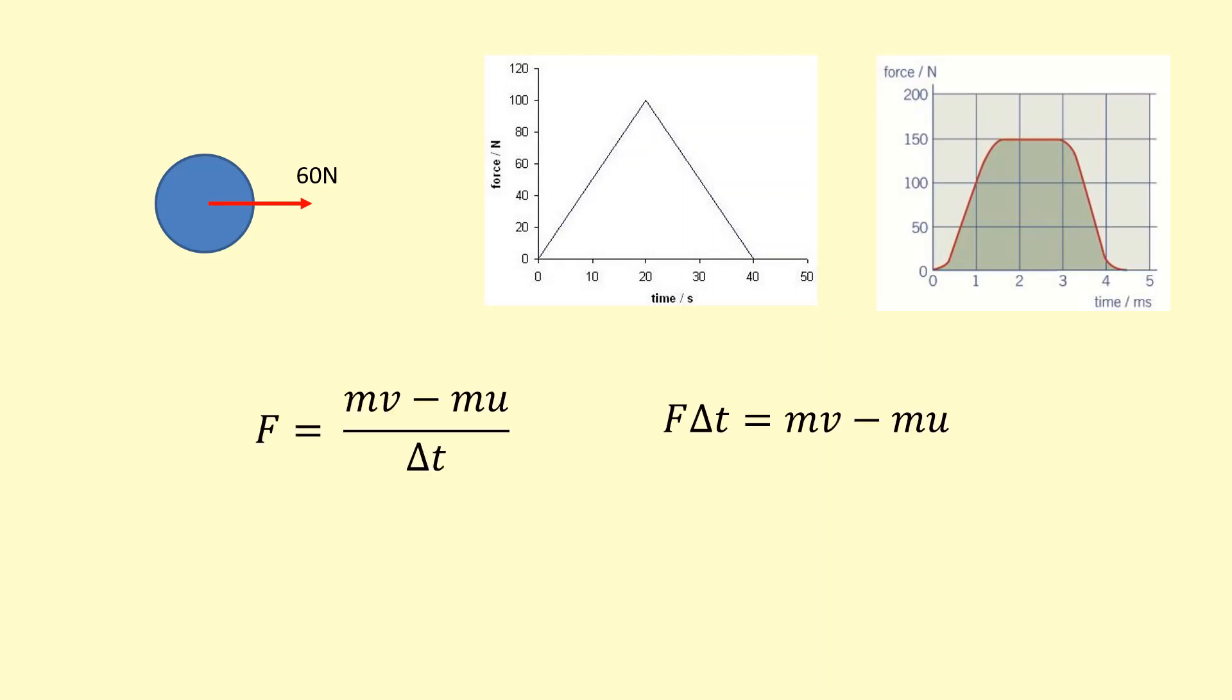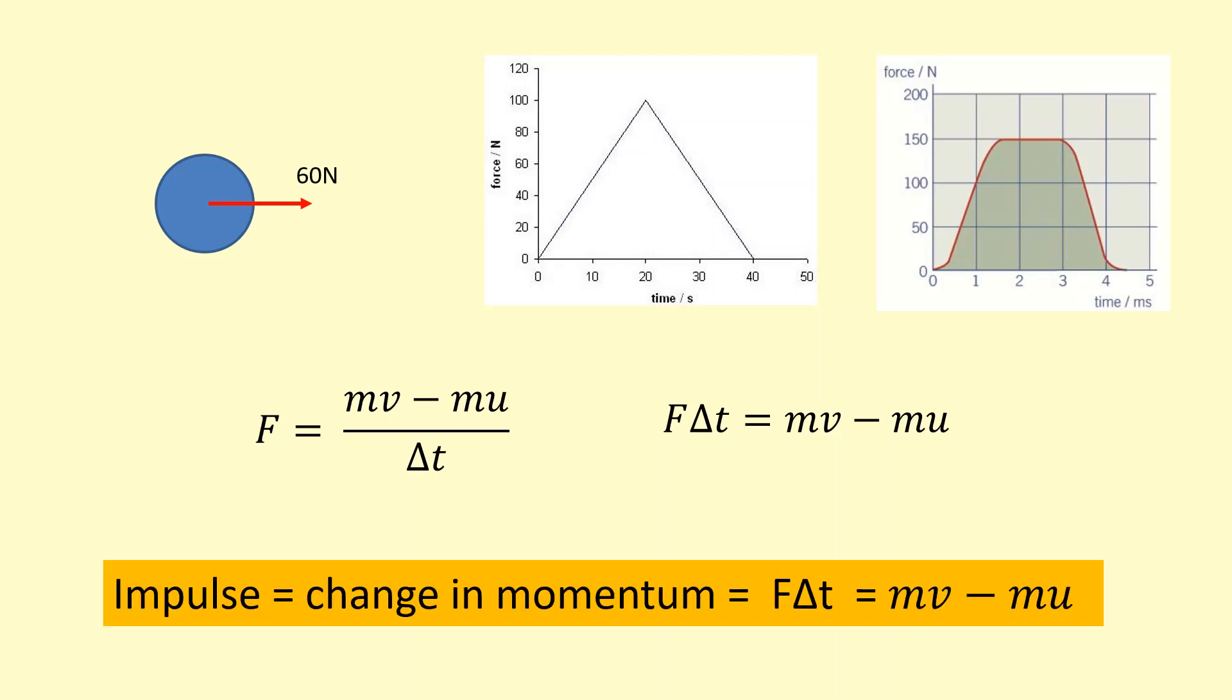Impulse comes from this equation, just rearranging it. Force times change in time equals change in momentum. So impulse just means change in momentum. Literally the same thing. You can get it in two ways. You can do force times change in time, or you can just do final momentum minus the initial momentum.